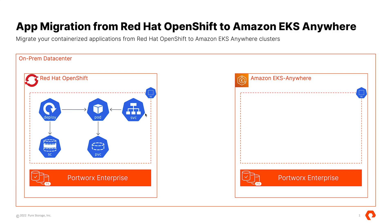We have two scenarios. The first one is application migration from an on-prem Red Hat OpenShift cluster to an on-prem Amazon EKS Anywhere cluster, and the second scenario is from an on-prem Red Hat OpenShift cluster to an Amazon EKS cluster running in the public cloud.